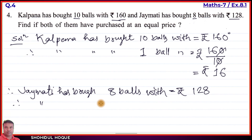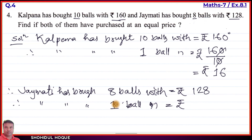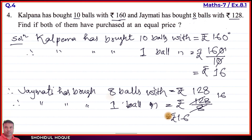Jhoi Moti has bought one ball. Calculating: 128 divided by 8 equals 16. So Jhoi Moti also bought one ball for rupees 16. Both Kolpona and Jhoi Moti bought each ball at rupees 16.